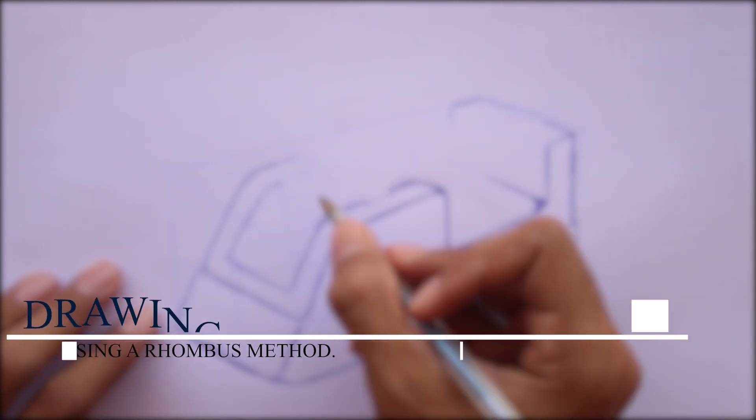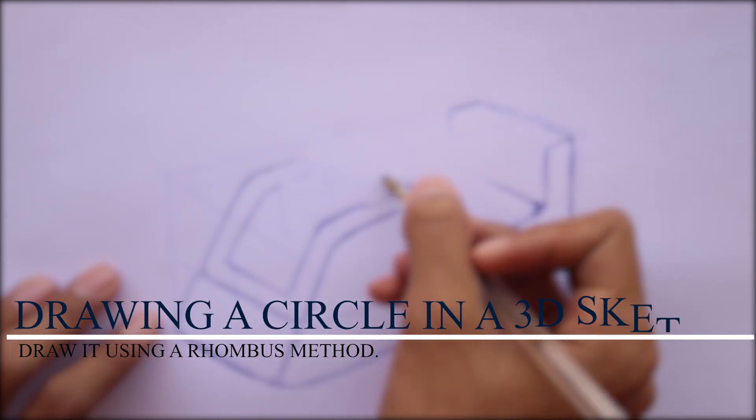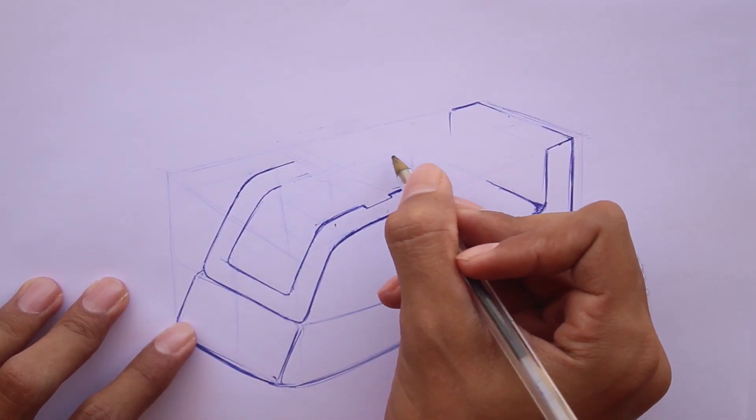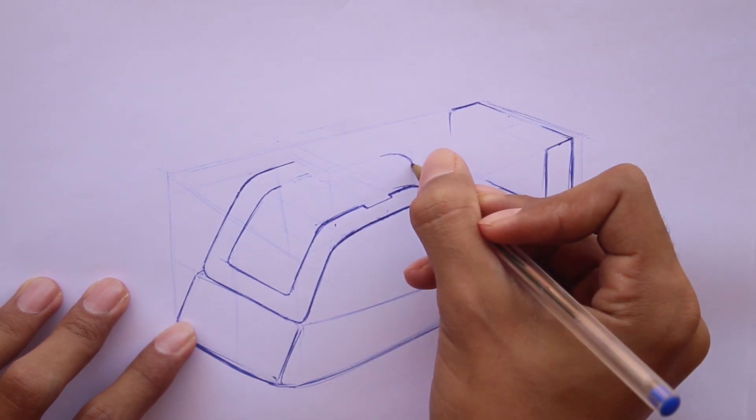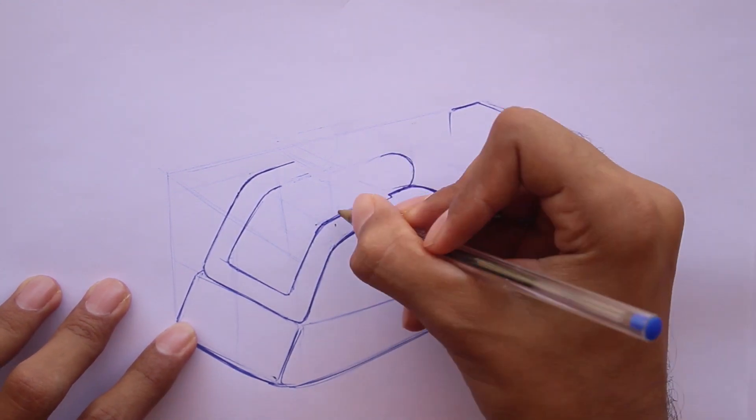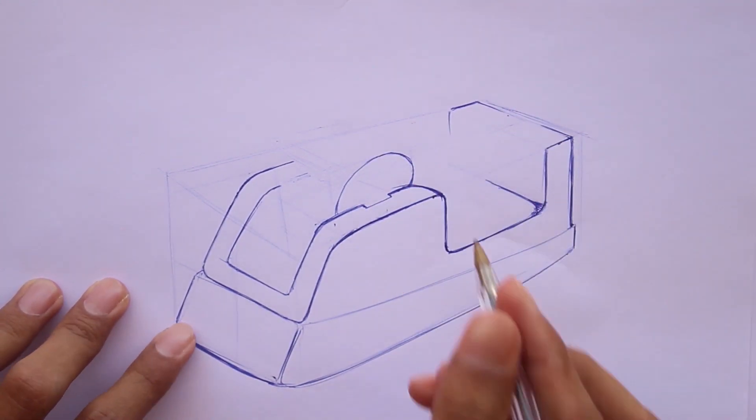Also, drawing a circle in a 3D scale, draw it using a rhombus method. To know how to draw a circle in a 3D sketch, watch my last video. Link in the description.